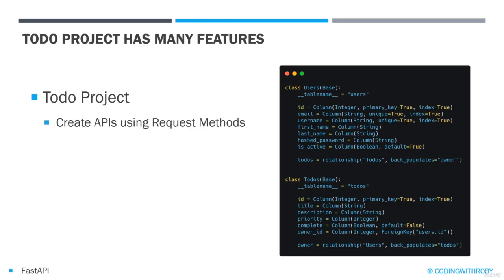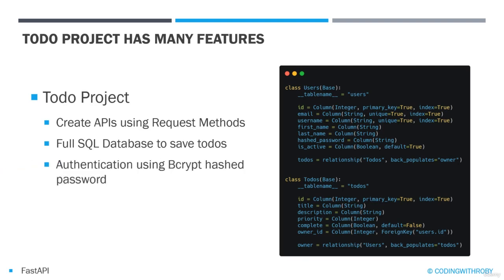We will create APIs for all request methods — GET, POST, PUT, and DELETE — and have a full SQL database to save to-do's and users, authentication using bcrypt hashing encryption, and authorization using JSON Web Tokens (JWT).